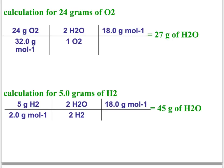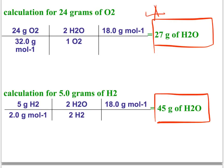The next step you do the same process with hydrogen, and then you found out that you had 27 grams of water from oxygen, 45 grams of water from hydrogen. This was a smaller amount, so that was the amount that was actually produced. This is what we call the theoretical yield.